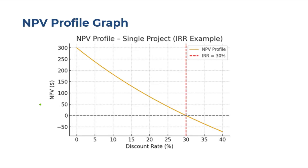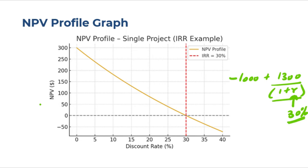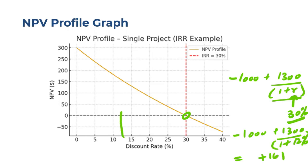Let's look at the NPV profile graph. As you change the discount rate, you get a different NPV. With cash flow of minus $1000 plus $1300/(1+r): at r = 12% NPV is +$161; at r = 30% NPV is zero (our IRR); above 30%, say 35%, NPV is negative. If you plot NPV against the discount rate, you get a downward-sloping curve that crosses the horizontal axis exactly at the IRR.